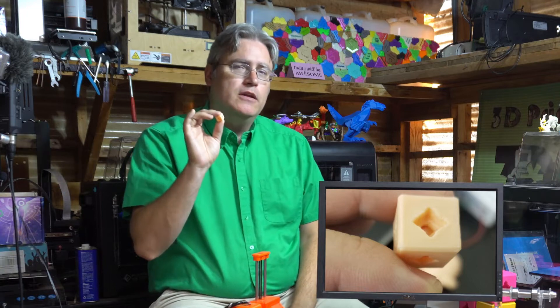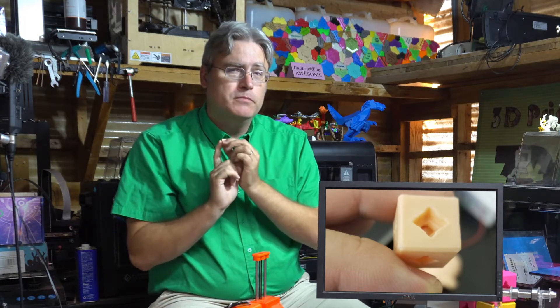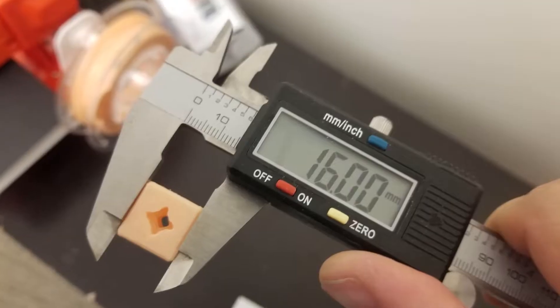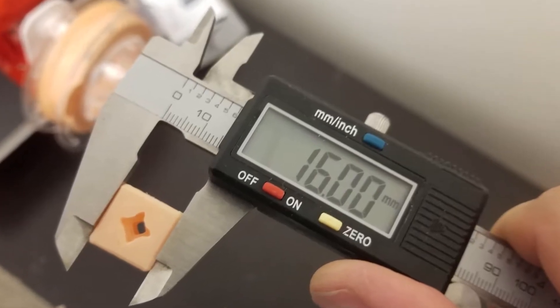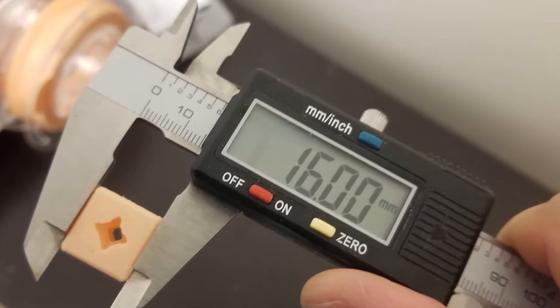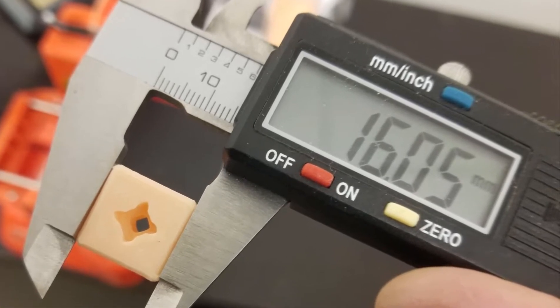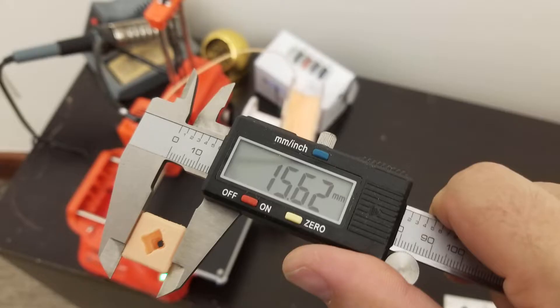Also, that gave me an opportunity to check the dimensions of the printer block. Printer blocks are supposed to be 16 millimeters on each side, and when I measured this one, the X, exactly 16 millimeters. The Y, close enough for me. And the Z, yeah, it's off in the Z.